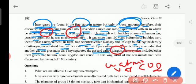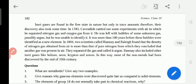Ramsay also included other inert gases like helium, neon, krypton, and xenon. In this way, most of the non-metals had been discovered by the end of the 19th century. Inert gases were found out lately, but the name was also given very late.